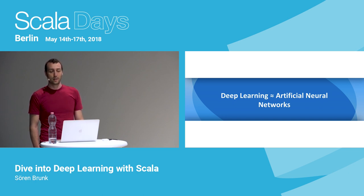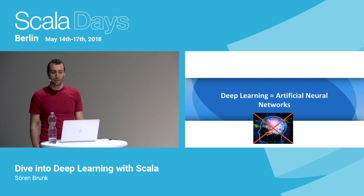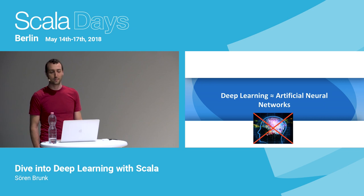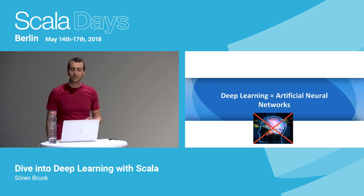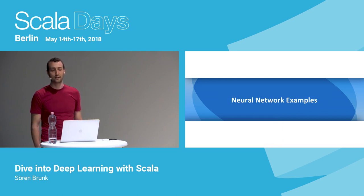But what is an artificial neural network? First of all, it's not a model of our biological brain. It's loosely inspired by the brain like airplanes are inspired by birds, but that's all. To gain some intuition, let's look at a few examples first.